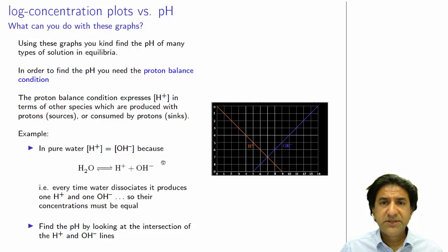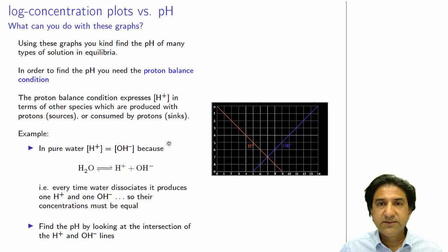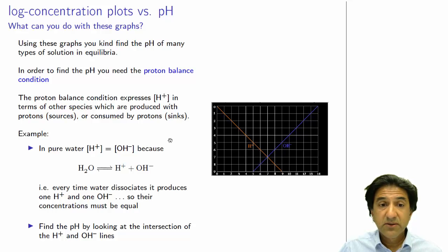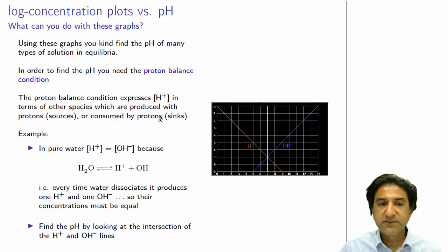We also need the proton balance condition. The proton balance condition is an equation which expresses the H⁺ ion concentration in terms of other species which produce the H⁺, called proton sources, or which consume the H⁺, called proton sinks.